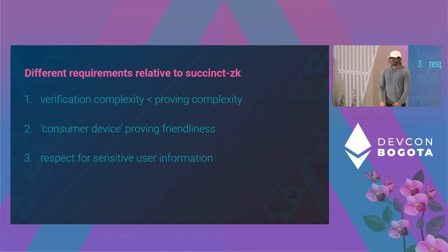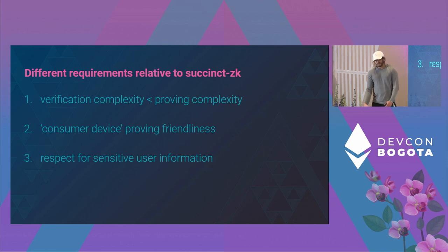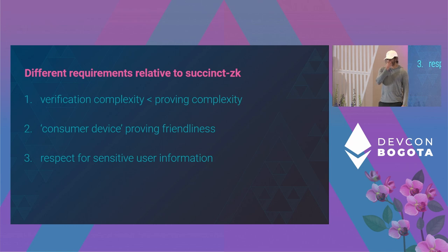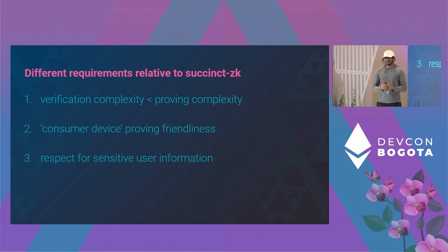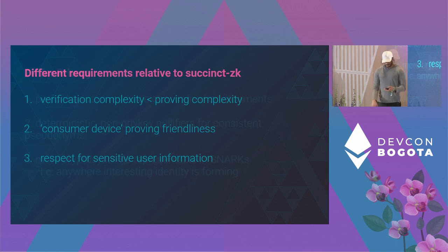The requirements in this quadrant are quite different. Verification complexity doesn't matter as much — it matters when verifying on-chain because you don't want the chain to spend a lot of gas, but if a human's verifying it, it can be done off-chain with consumer hardware. Proving complexity matters a lot more because we're usually operating on a consumer device. So consumer device proving friendliness — making things work in a web browser or on a mobile device — is a key concern. Given that we care about privacy in this quadrant, respect for sensitive user information is also critical. Ayush's work on a new deterministic nullifier scheme came from realizing we couldn't pass a private key around different parts of application memory.